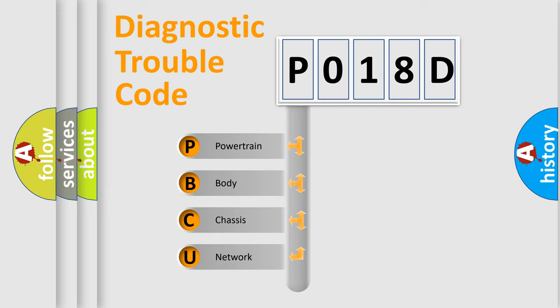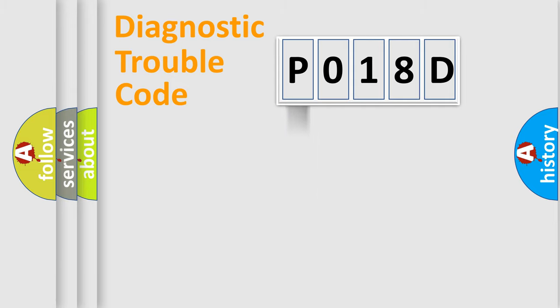We divide the electric system of automobile into four basic units: Powertrain, Body, Chassis, and Network.